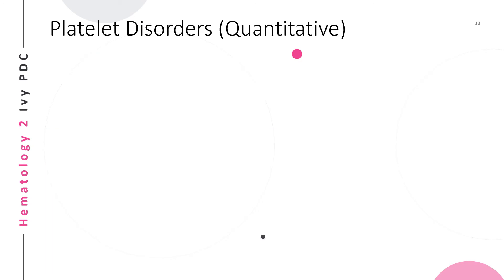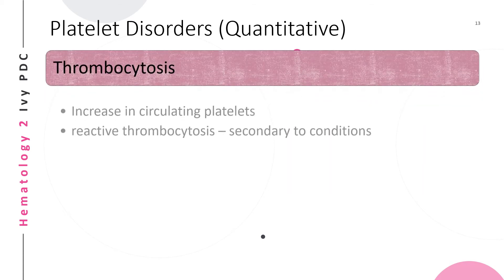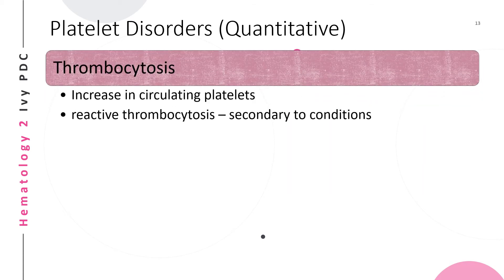The second type of platelet disorder is quantitative — either an increase or decrease in platelet count. Thrombocytosis is an increase in circulating platelets with an abnormally high platelet count of more than 450,000 per microliter.